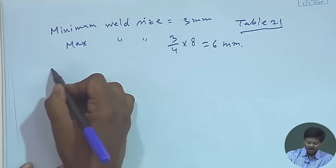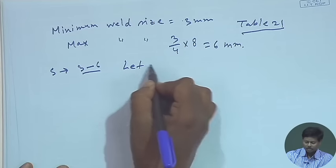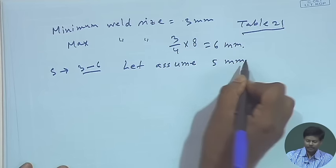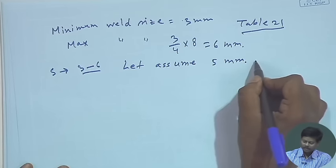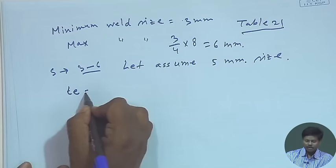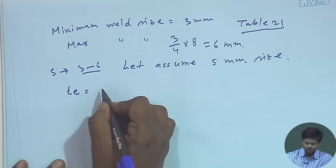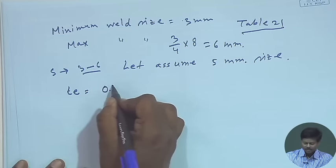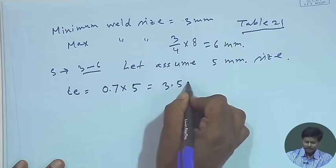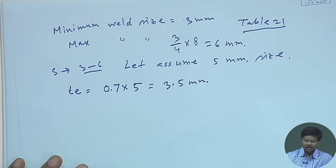We can assume a size of 5 mm. The throat thickness, assuming a 90-degree angle of fusion, will be 0.7 × S = 0.7 × 5 = 3.5 mm. Since the external load is not given, we do not know the design strength required for the joint.